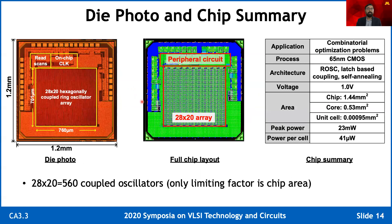Here is the die photo and the chip summary. We designed a 1.2 mm × 1.2 mm chip in 65 nanometer CMOS technology. The peak power was 23 milliwatts and the power per cell was 41 microwatts. Our only limiting factor for keeping the number of oscillators to 560 was the chip area.